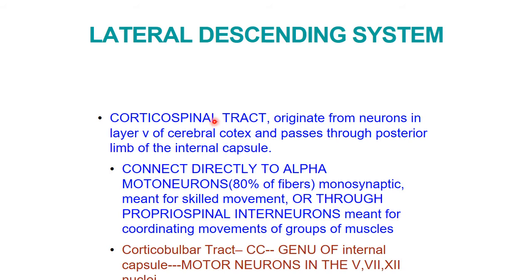The corticobulbar tract accompanies the corticospinal tract as part of the lateral descending system. It arises from the cerebral cortex and passes through the genu of the internal capsule — the junction of the anterior and posterior limbs — then relays into the motor nuclei of cranial nerves V, VII, and XII, ultimately terminating in the respective muscles.